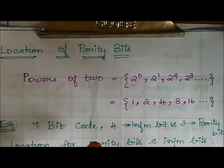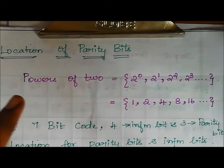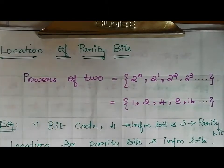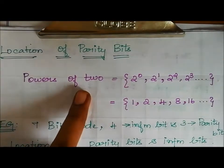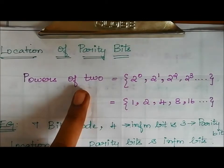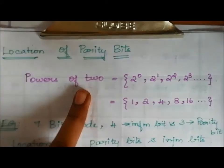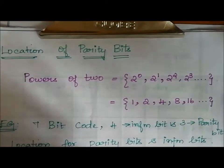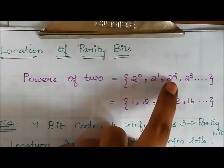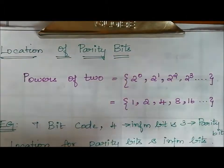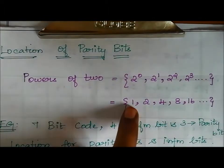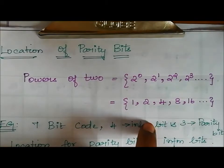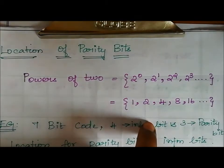The location of parity bits in the message is placed at power-of-2 positions. Power of 2 gives us positions: 2^0, 2^1, 2^2, 2^3 — that is 1, 2, 4, 8, 16. Parity bits are placed at these positions.